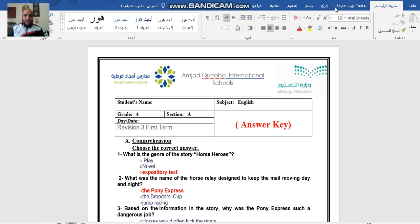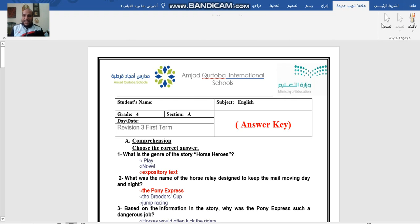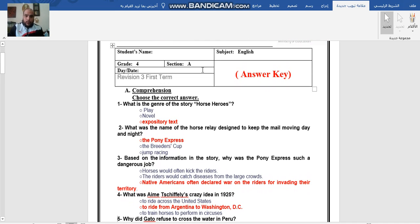Bismillah ar-Rahman ar-Rahim, wa salatu wa salamu ala Rasool Allah al-Ameen, Sayyidina Muhammad, wa ala alihi wa sahbihi ajma'in, sallallahu alayhi wa sallam. So today we're going to revise together for the exam, which is too easy. It's gonna be an easy exam. All the questions you might have in the exam, and all the rules that I'm going to explain today, you might have those in the exam. I'm going to make sure that everything is clear. Let's start with the comprehension. The exam is going to be about Horse Heroes. It's not going to be about scene two.